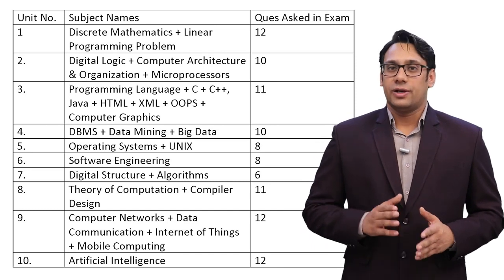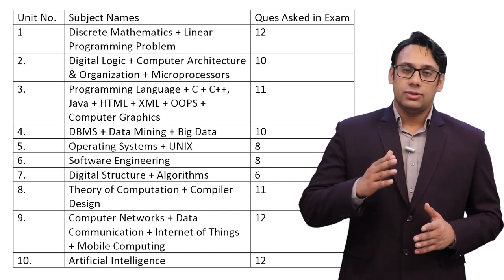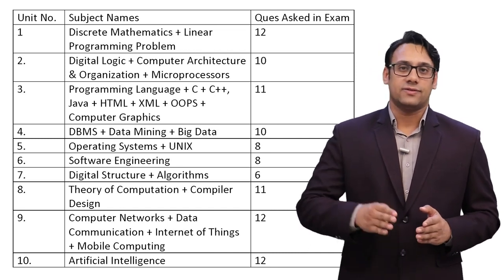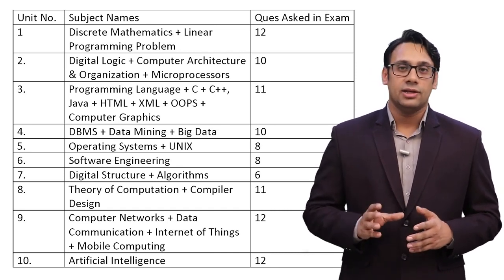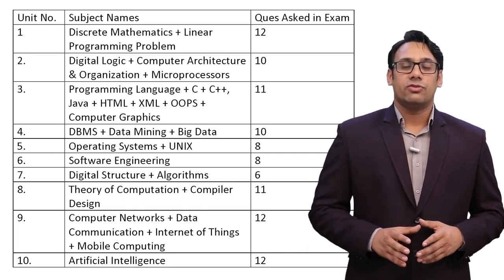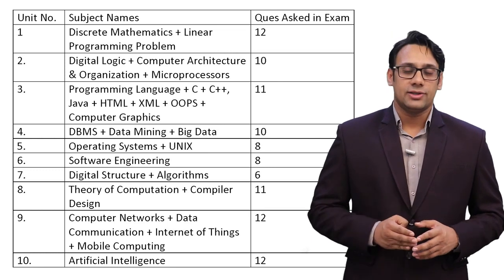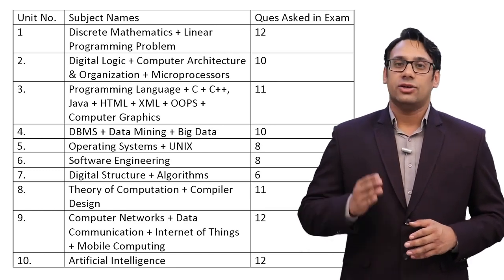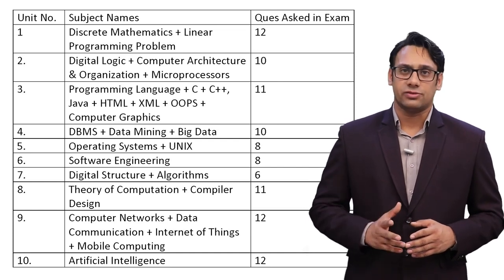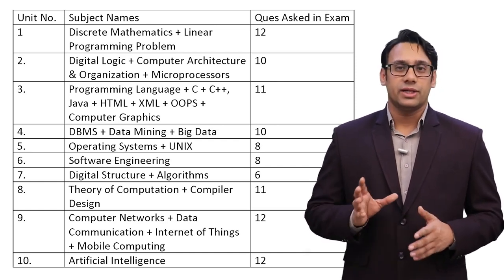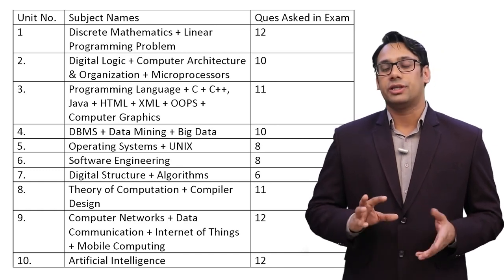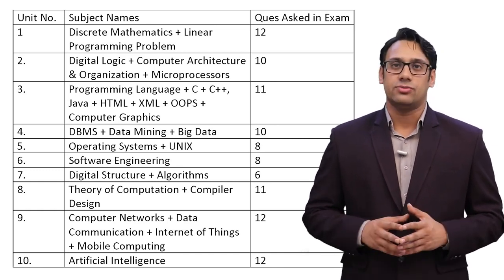Unit 5 is operating system and Unix, which also includes Linux. The commands in Unix and Linux are very similar, and their structure is also very similar. So the maximum amount of time should be spent studying operating system. For Unix and Linux case studies, 2 to 3 days — meaning 12 to 15 hours — is more than enough.